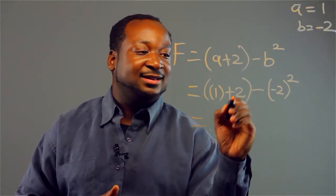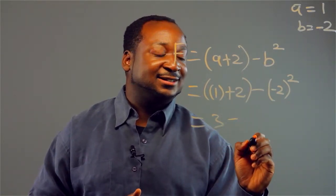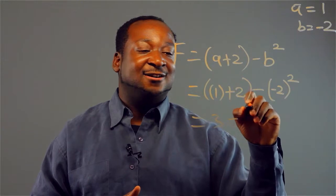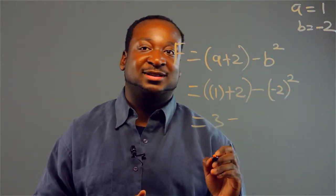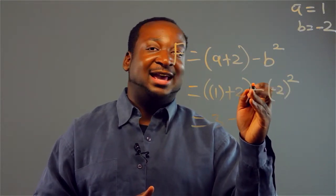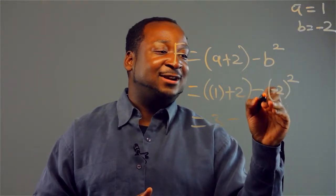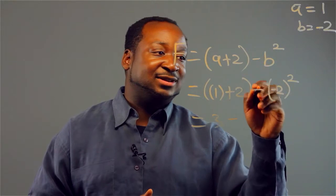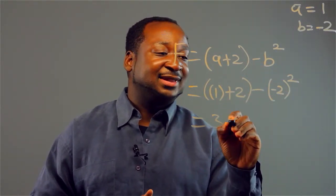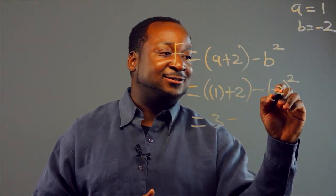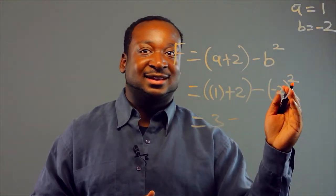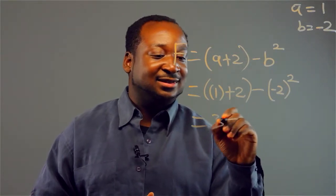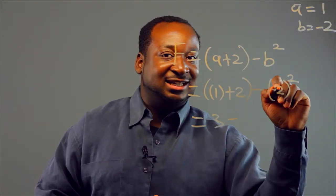Over here you have 3 minus... Now, oftentimes what people will do when they don't put the parentheses in, they'll say okay, we have negative 2 squared but the negative signs cancel out. That's if you don't use parentheses — it might seem that way. But no, this is actually minus negative 2 squared, which is 4. So you don't want to say this is 3 plus 4.